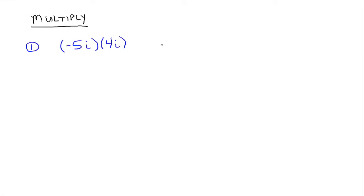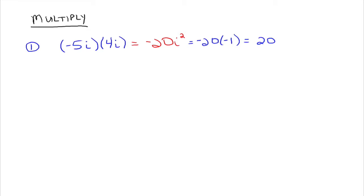For multiplication — for example, negative 5i times 4i — we can write this as negative 5 times 4, which is negative 20, and then i times i, which is i squared. Since i squared is negative 1, we can rewrite this as negative 20 times negative 1, and negative 20 times negative 1 is just 20. So negative 5i times 4i is just 20.